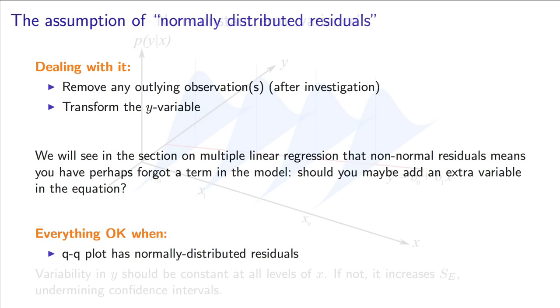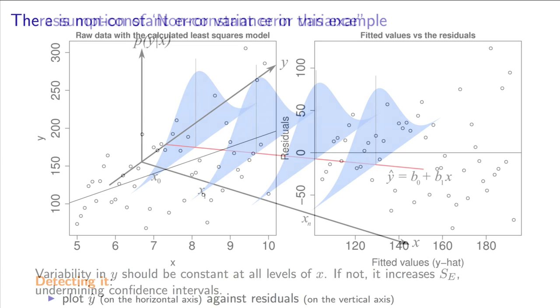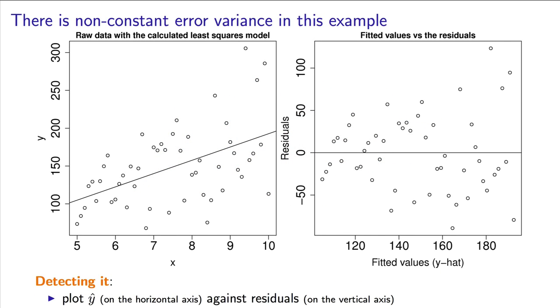Let's look at this next assumption of non-constant error variance. This is the assumption that the residuals are normally distributed with the same variance at all values of x. The easiest way to detect it is to look for a fan shape in our data when we plot the residuals against either x or plot the residuals against the predicted value of y.